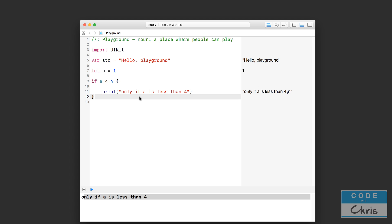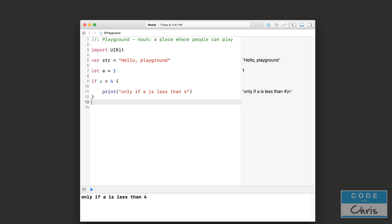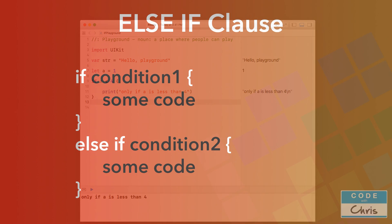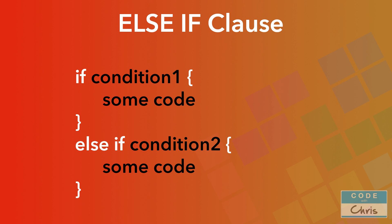There are other cool things you can do with an IF statement — there is an else if clause. Using the else if clause, you can check a second condition if the first condition evaluates to false. So you have your IF condition and curly brackets, then you use the keywords else if, check another condition, and have another set of curly brackets. You're basically checking condition one — if it's false, you check condition two, and if that evaluates to true, you run the code inside that else if block.